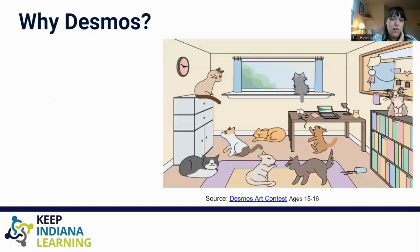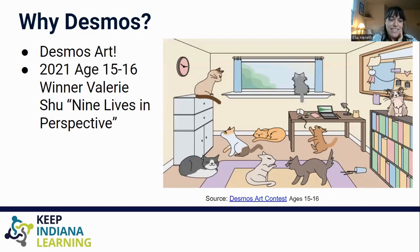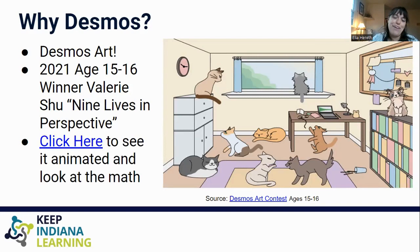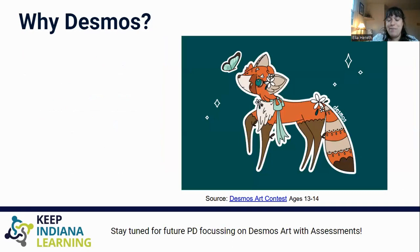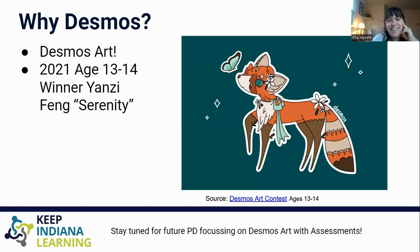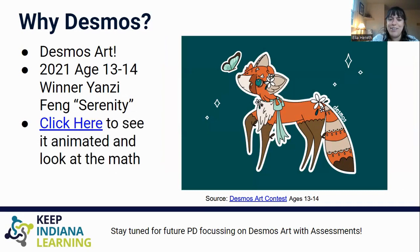One example of how it's become a playground is through the amazing Desmos global art contest. This is the winner in 2021 from the 15 to 16 age category. And that whole image is created in a Desmos graphing calculator. Every single one of those lines and those shaded sections is a function. You can click on the link, see the actual graphing calculator link, and see some of the animations as well. And open the folders and look at the math. Here's the winner from the 13 to 14-year-old category.